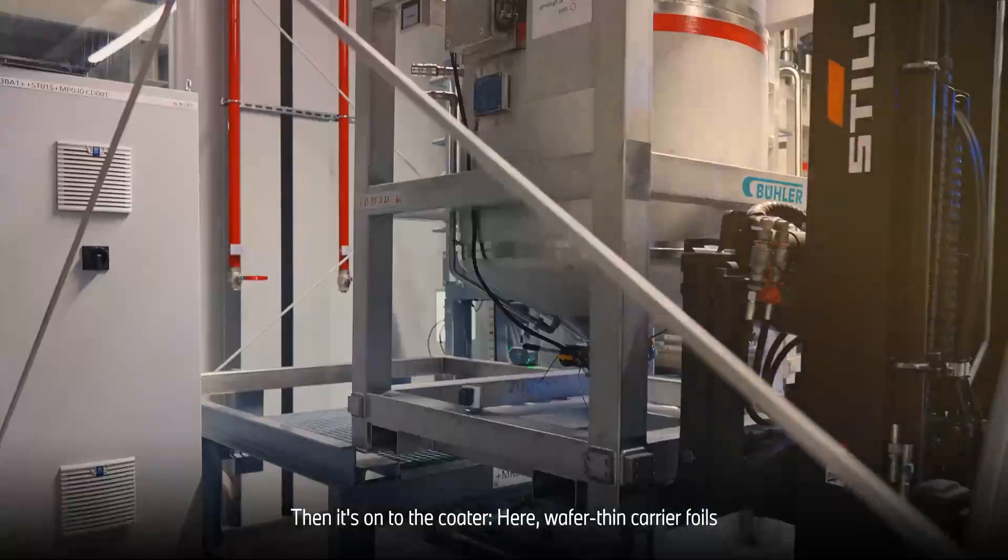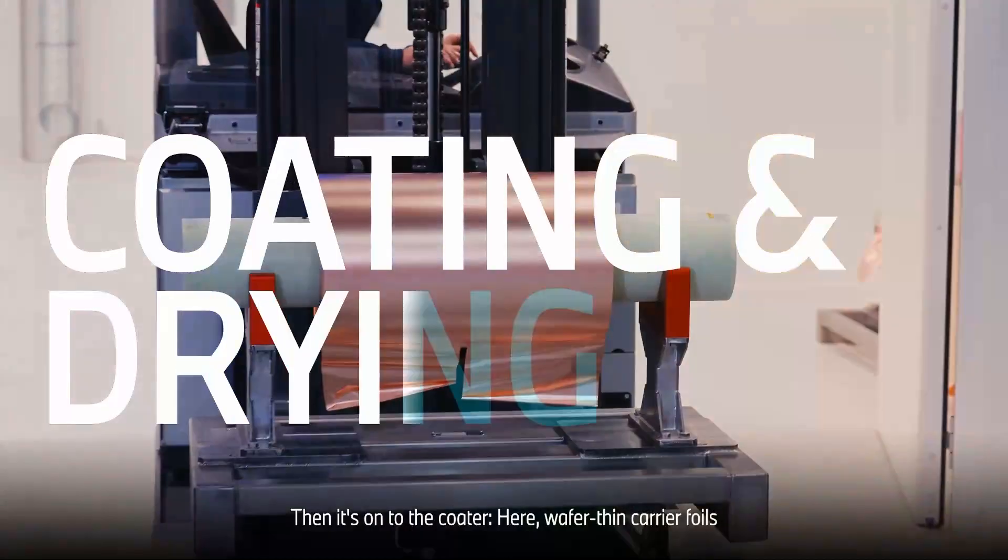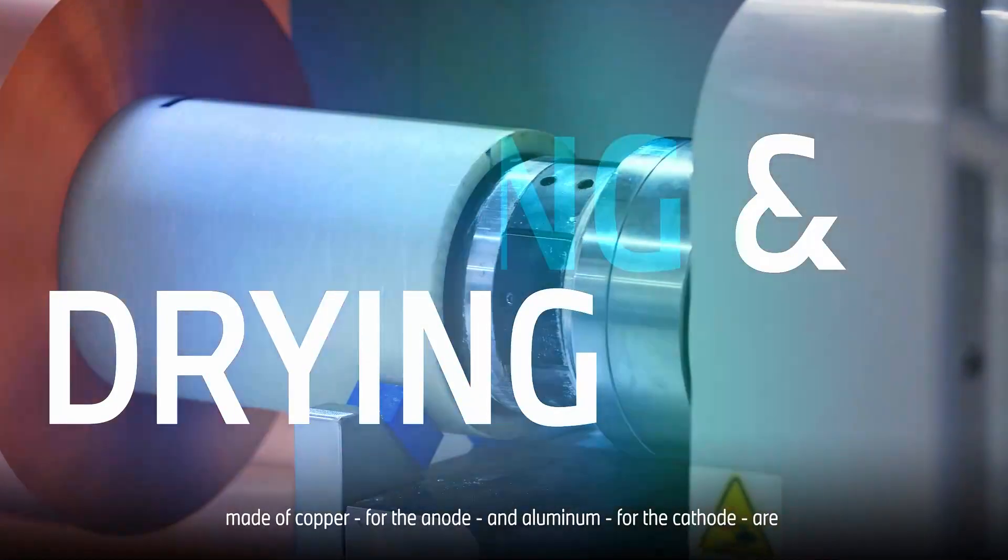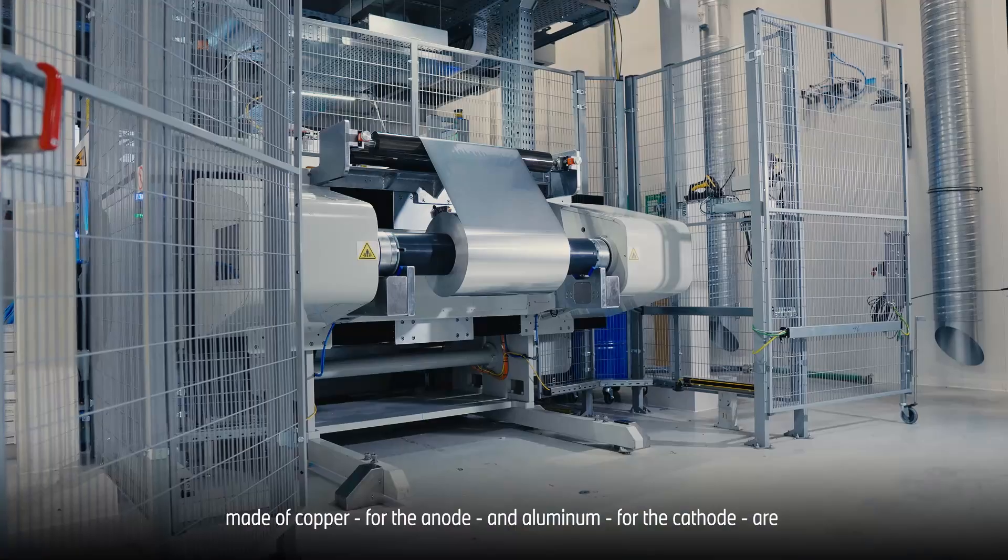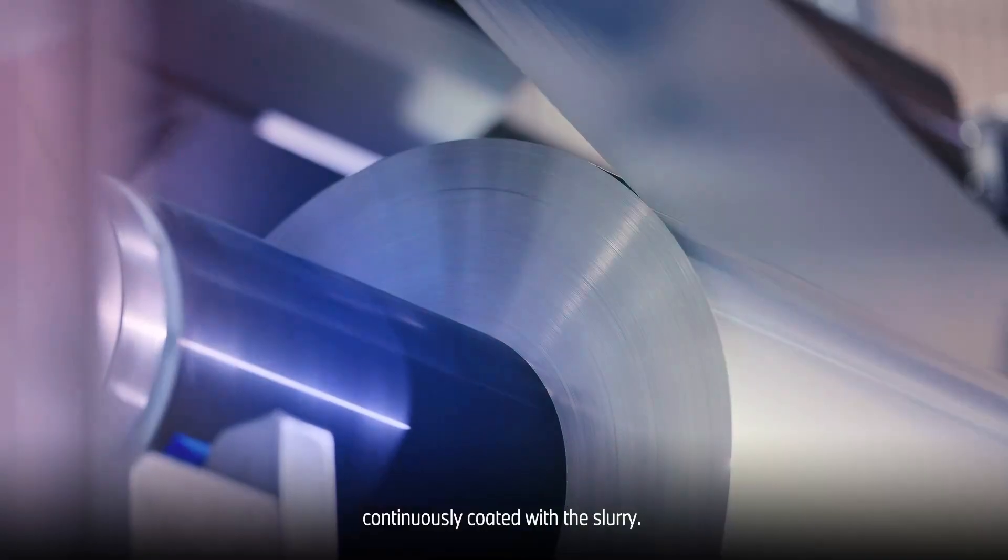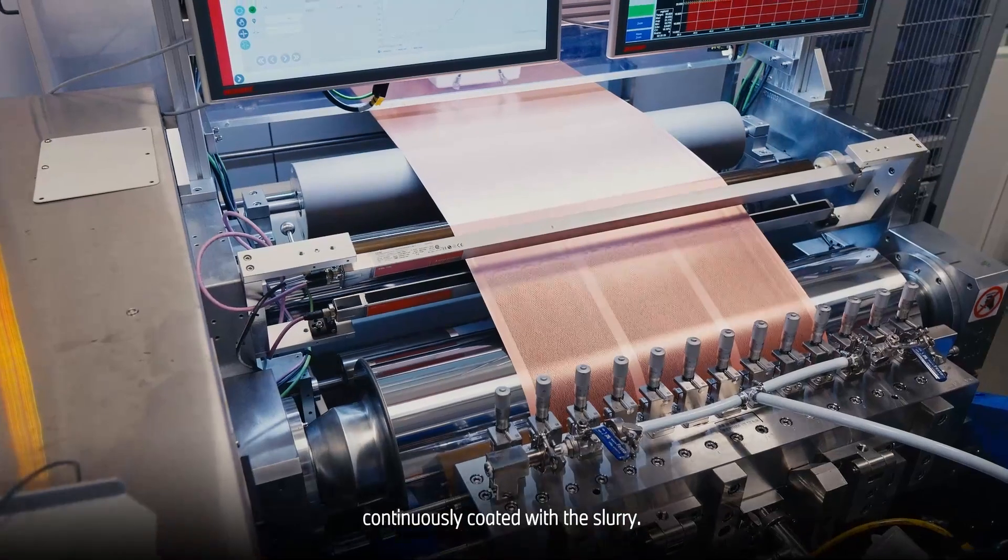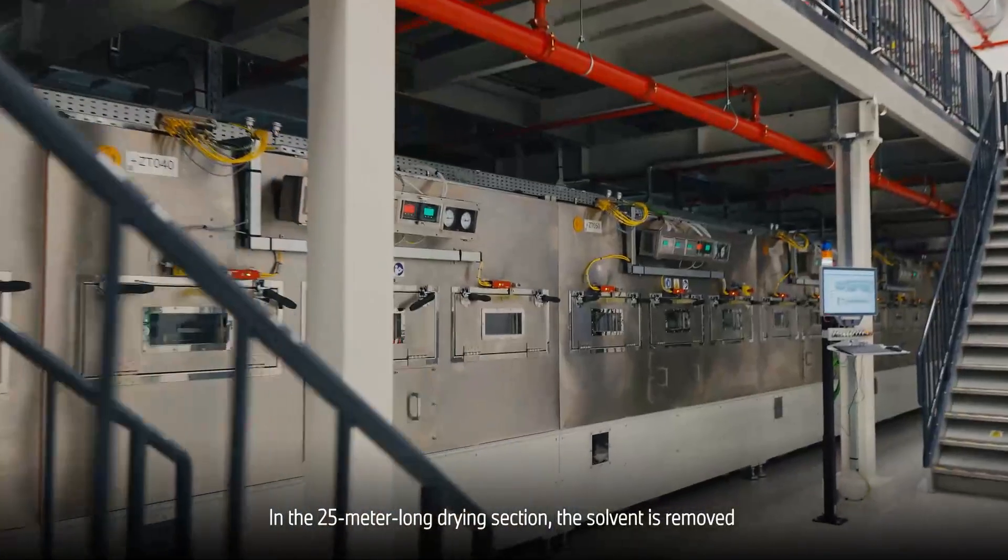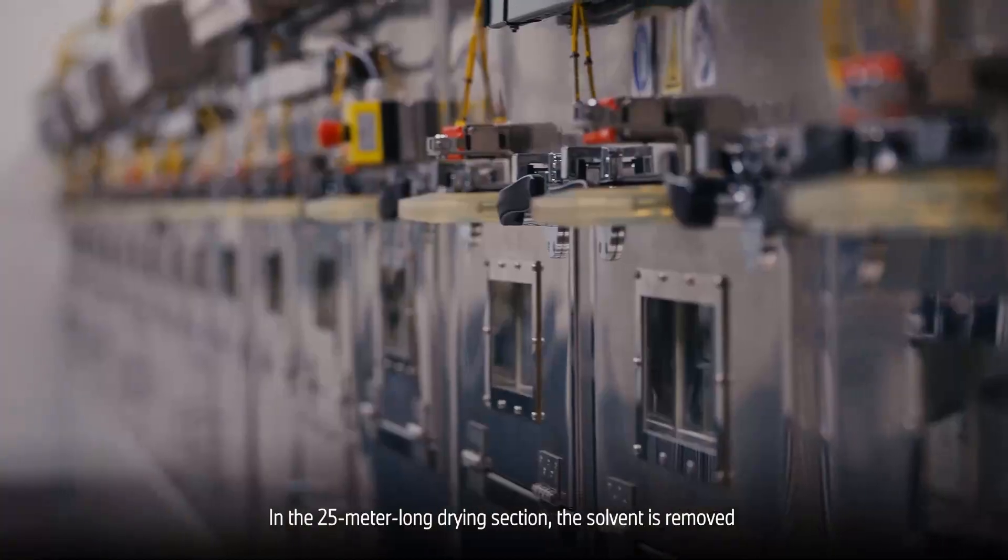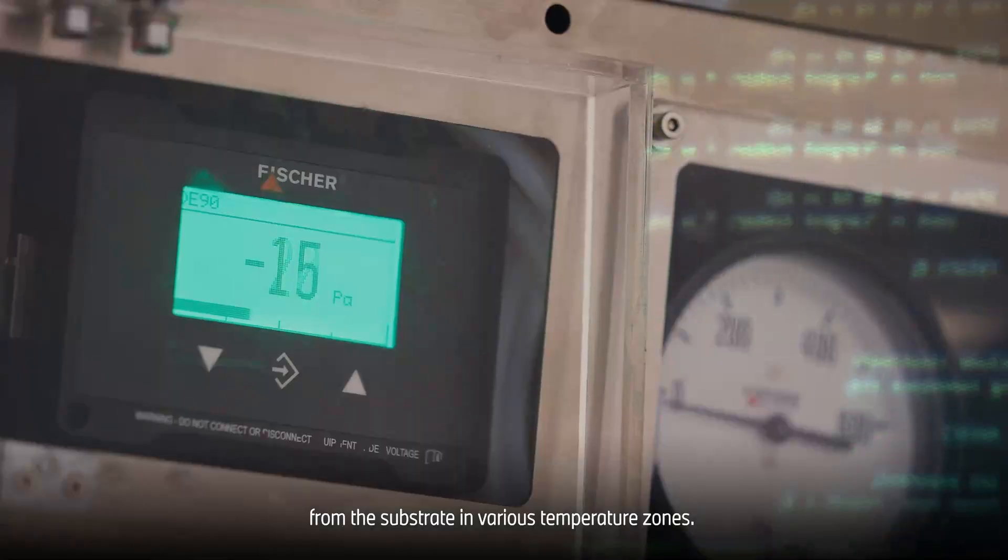Then it's on to the coater. Here, wafer-thin carrier foils made of copper for the anode and aluminum for the cathode are continuously coated with the slurry. In the 25-meter-long drying section, the solvent is removed from the substrate in various temperature zones.